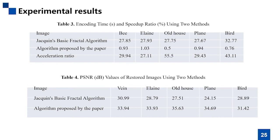According to the detection results, when the optimal threshold Q is selected, the decoded image quality of the algorithm in this paper is better than that of the basic algorithm, and the encoding speed of the algorithm in this paper is about 35 times that of the basic algorithm, making it an effective image compression method.